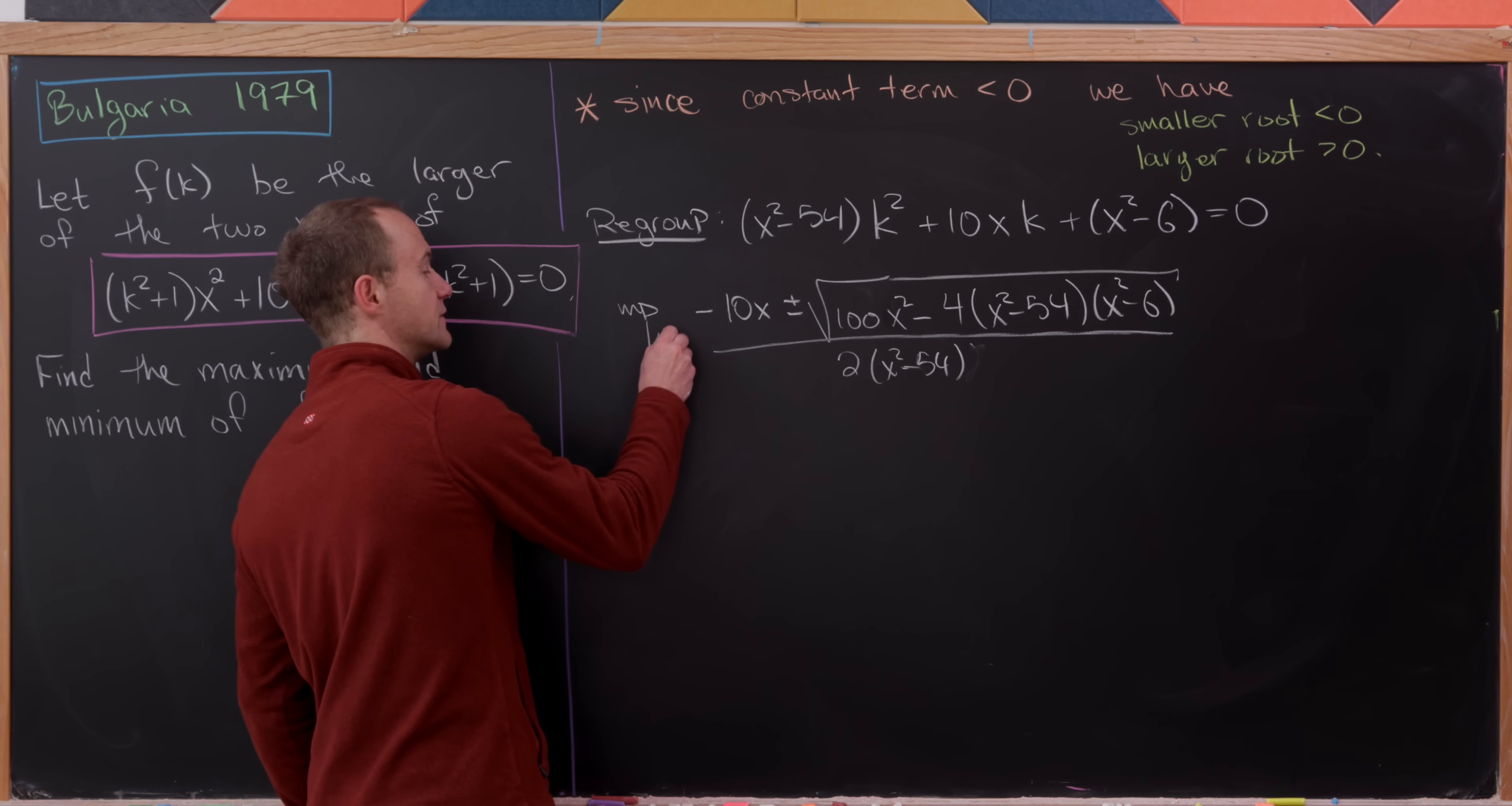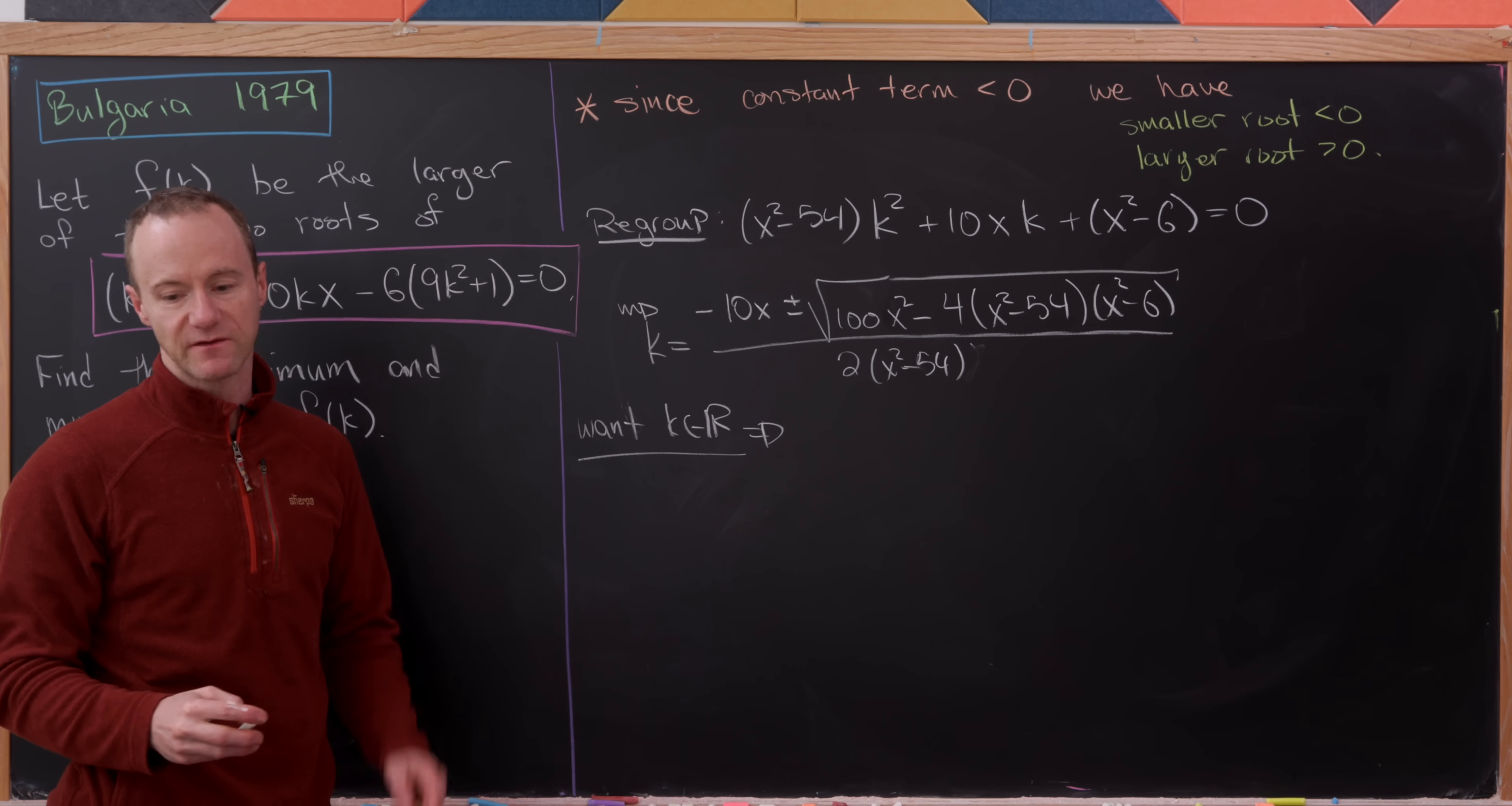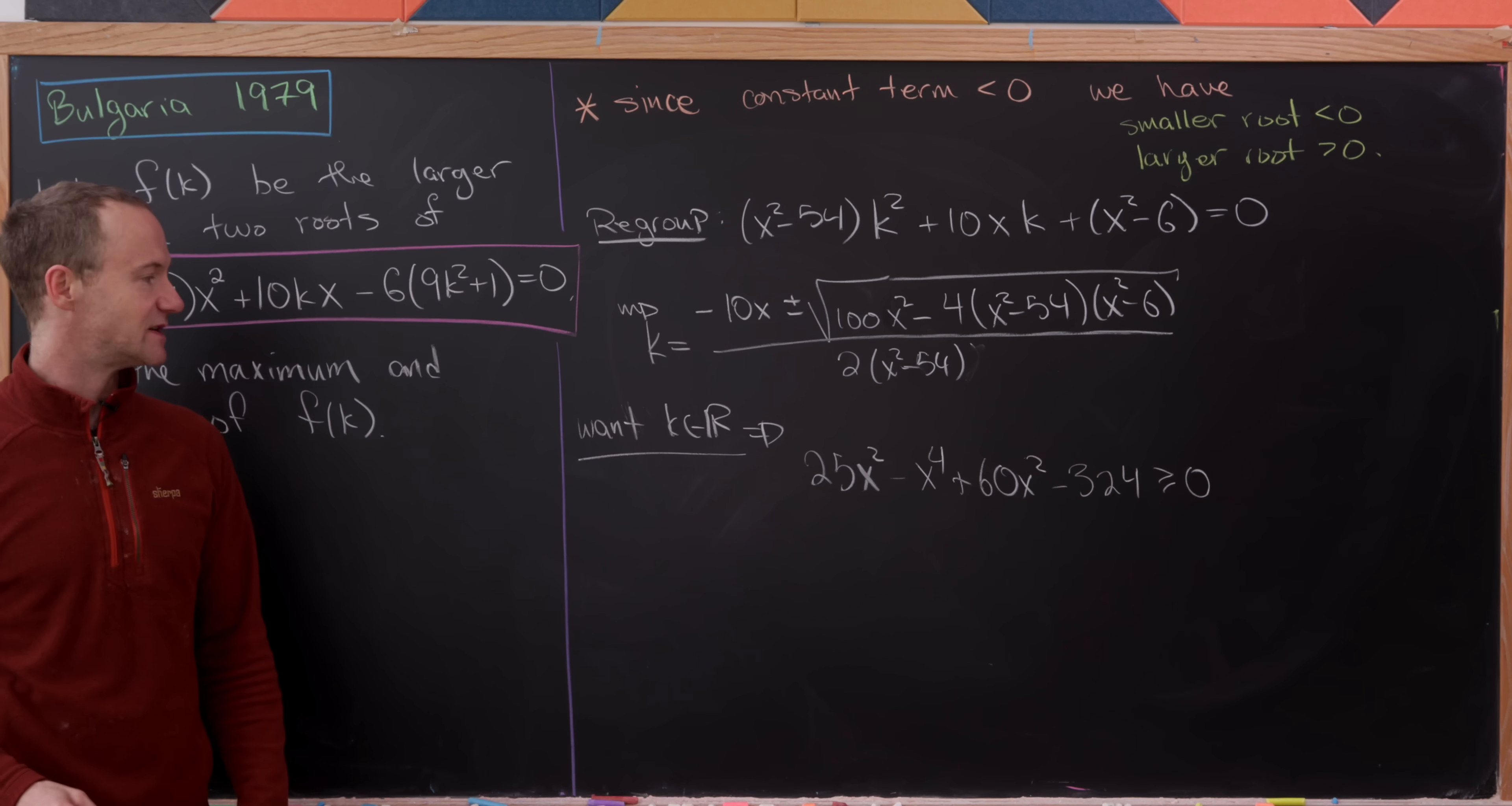These are the values of k solving this equation in terms of x. What we want is the k values to be real because that'll force the x values to be real. That means we need this discriminant to be ≥ 0. Observe that every term in this discriminant is divisible by 4, so we might as well divide by 4 and multiply out. That gives us 25x² - x⁴ + 60x² - 324. We want this to be ≥ 0 to force k to be real.